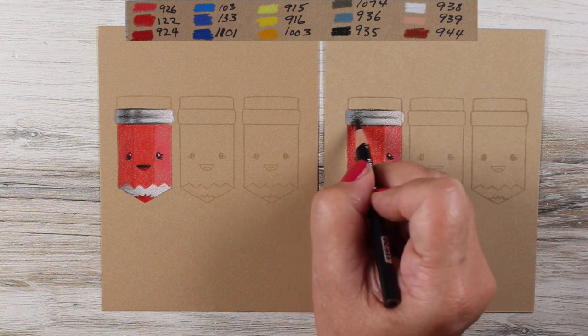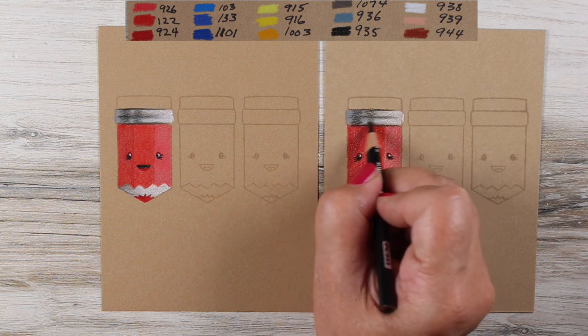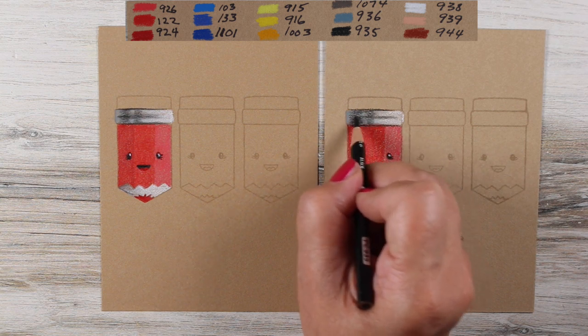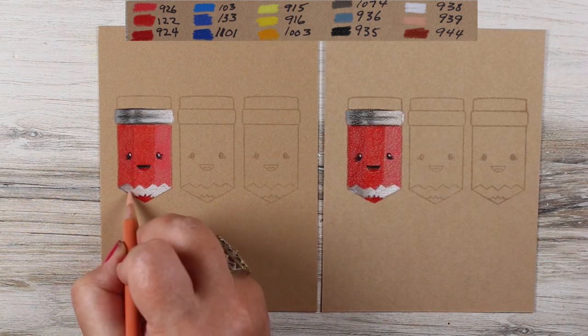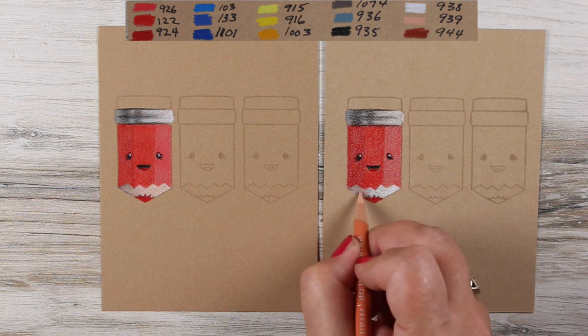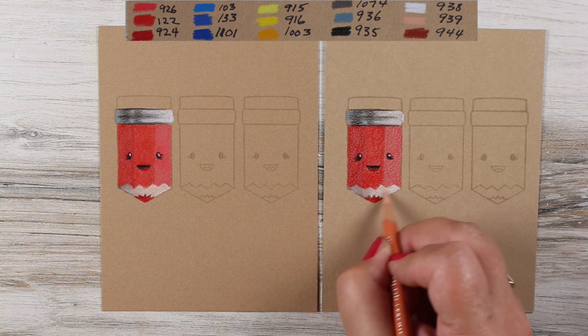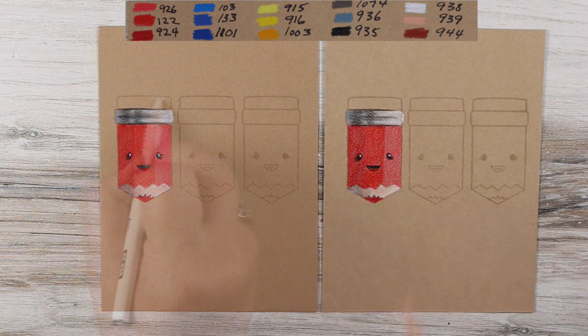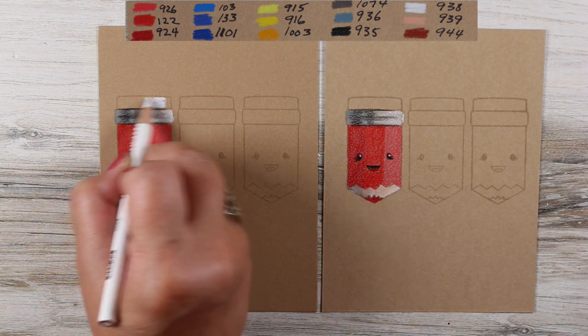I decided to add a little bit to the band that's around the end of the pencil, just to create a little bit of interest there, so it wasn't just all these really simple shapes. Then I went over with a tan pencil to color the wood and decided to use that for part of the eraser as well.